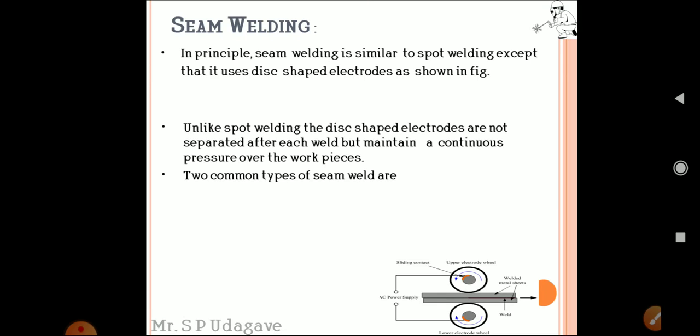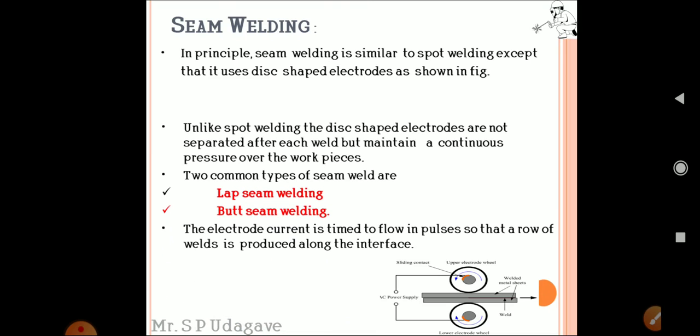Two common types of seam welds are the lap seam weld and the butt seam weld. The electrode current is timed to flow in pulses so that a row of welds is produced along the interface.